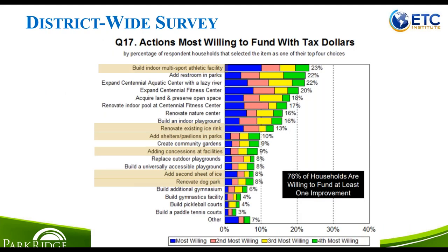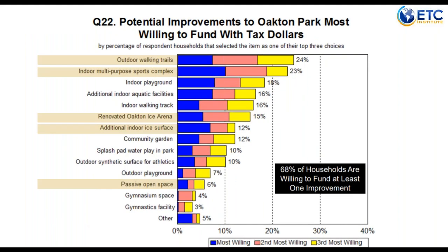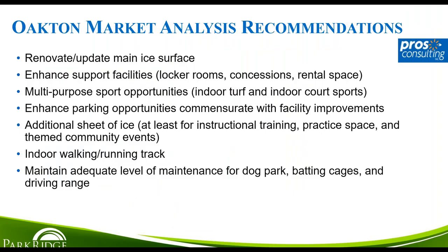Another step in our evaluation was completing a Statistically Valid Needs Assessment Survey in 2018 to determine the top priorities of residents, both at Oakton and throughout the district. When asked what they were willing to fund with tax dollars, an indoor multi-sport athletic facility was most supported at 23%. Asked specifically about Oakton Park, an outdoor walking trail ranked highest at 24% and a multi-sports complex was next at 23%. In September 2018, we also worked with PROS Consulting on a market analysis to determine the viability of top amenities and identify what is already adequately provided in the private sector.